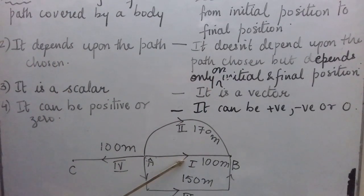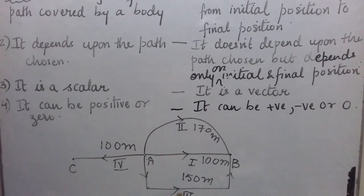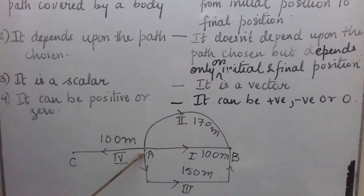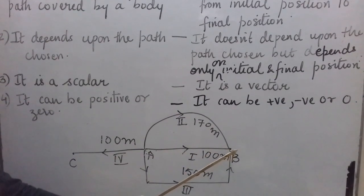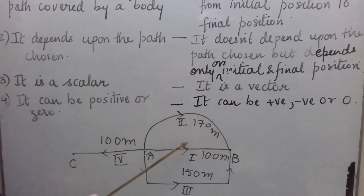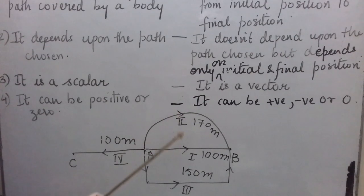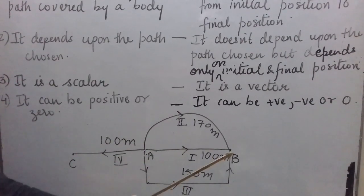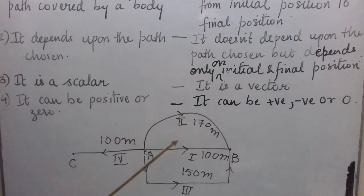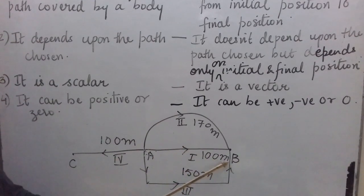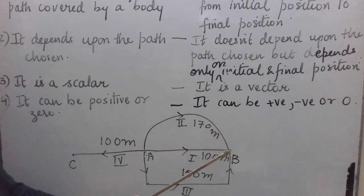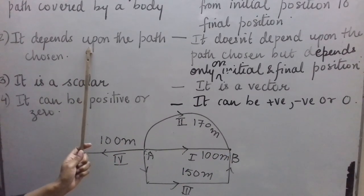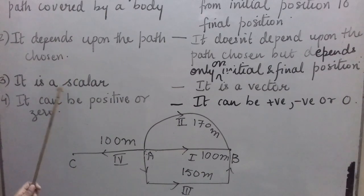As we have seen, the first, second, and third persons all have initial position A and final position B, but their distances are different while their displacements are the same — 100 meters from A towards B. So even though they have travelled different paths, since their initial and final positions are same, their displacement is the same.